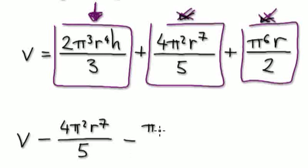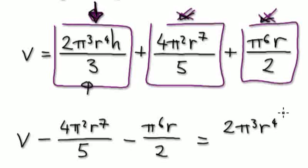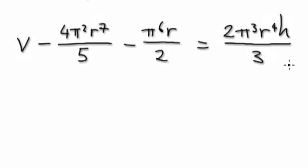And then you're taking away this block, which is pi to the power of 6, r over 2. That equals what's left on this side — this block here — which is 2 pi to the power of 3, r to the power of 4, h, all over 3. Looking at this, you know you've got to times 3 later on, just to kill off this 3.